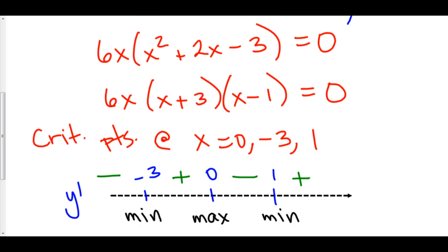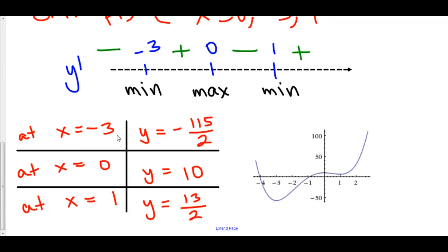Now, what we've done here is we have found where the extrema are. However, we haven't found what the extrema are. We know the locations of our extrema at x equals negative 3, 0, and 1, but the extreme values are the y values of the function at those points. So to find the actual extreme values of y, you would have to plug these three x values back into your original equation. At x equals negative 3, y is negative 115 over 2 — so this is a relative minimum. At x equals 0, y is 10 — so here is a relative max. And at x equals 1, y equals 13 over 2 — here's another relative min.